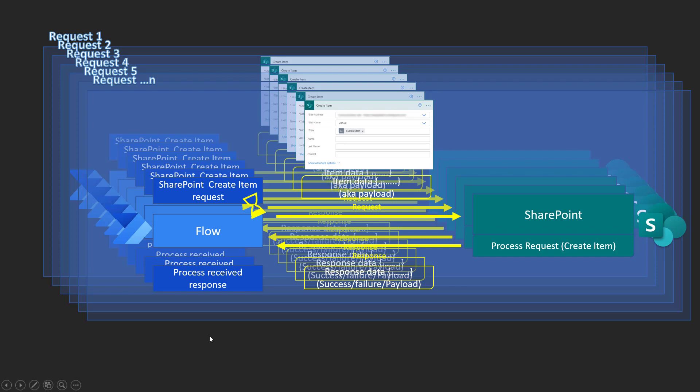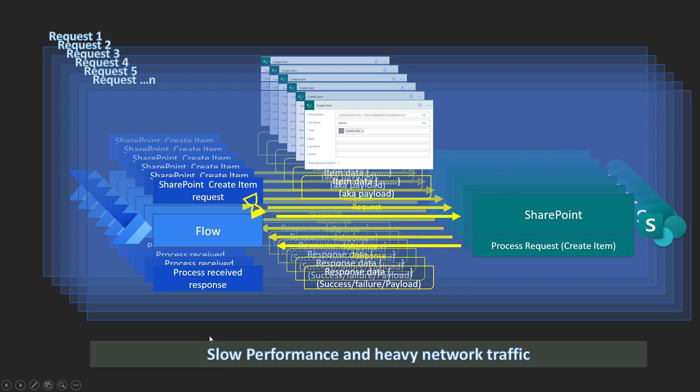The result was slow performance — it took six minutes because it kept sending those requests and waiting for each response. So how can we avoid those 1000 separate requests going to SharePoint, and instead send just one request with all the different item information in it?